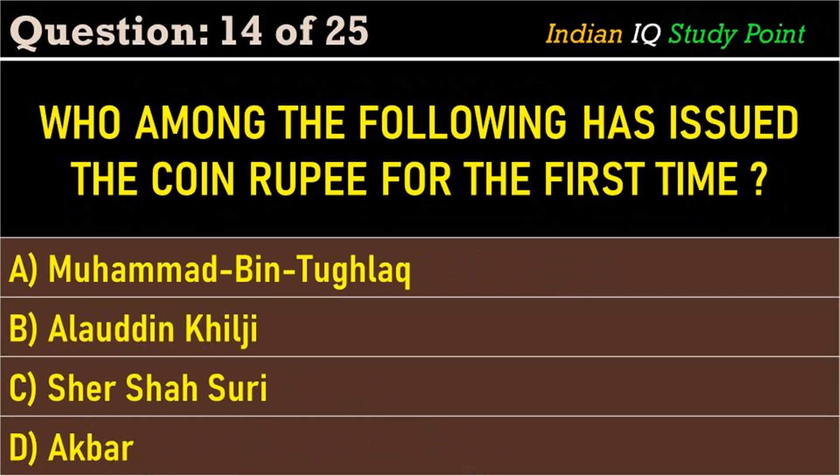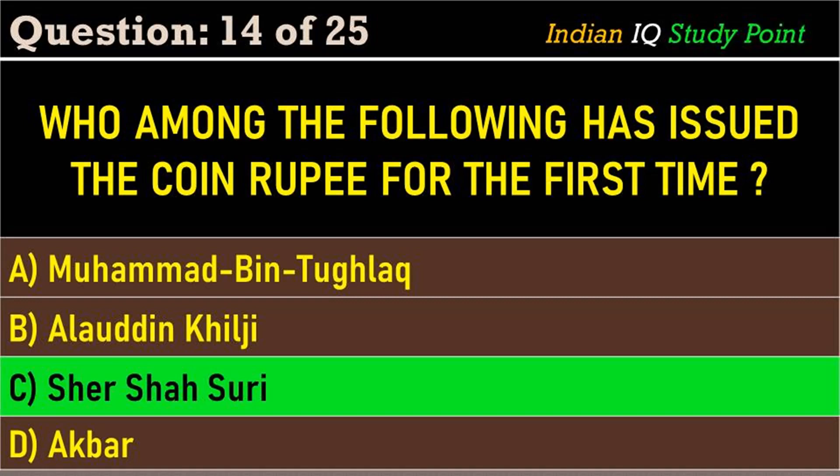Coming to the next question: who among the following issued the coin in rupee for the first time? Option A. Muhammad bin Tughlaq, B. Alauddin Khilji, C. Sher Shah Suri, D. Akbar. And the correct answer is Option C. Sher Shah Suri.